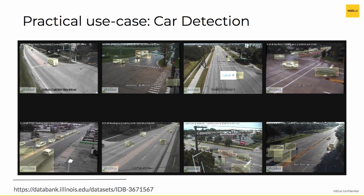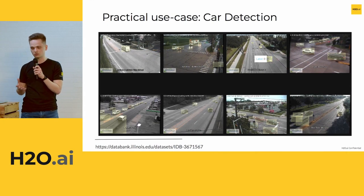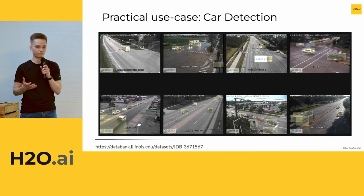There could be intersections or roads in these images. For this dataset, you can imagine use cases like estimating traffic jams at a particular location, counting how many cars pass through an intersection, or optimizing the working hours of traffic lights.